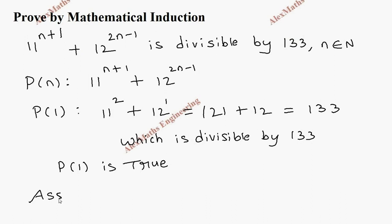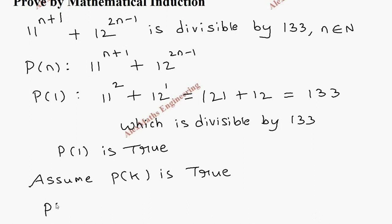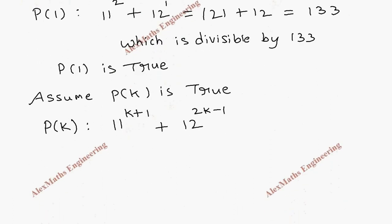In the same way, we assume P(k) is true. It means we write the entire expression in terms of k: P(k) is 11^(k+1) + 12^(2k-1) is divisible by 133.